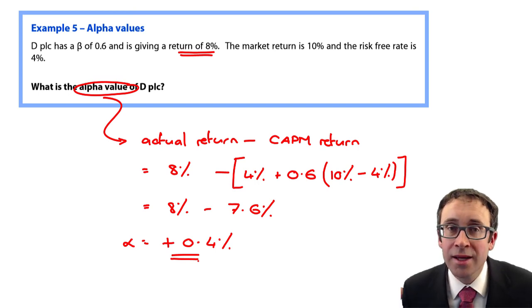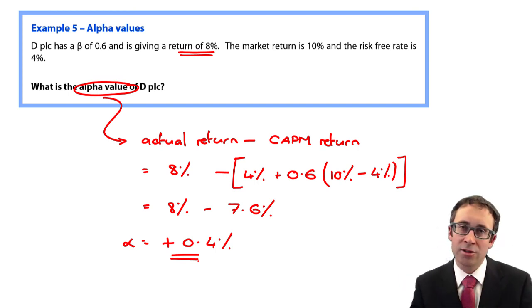That's it. There's nothing else to it in terms of alpha value. So if you get a question on alpha values in the exam, thumbs up, you should be able to do it reasonably straightforwardly.